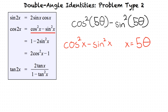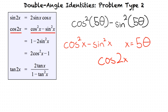Now that we know what form our problem is in, we can find the corresponding double angle formula. Going back to our double angle formula table, we see that the corresponding double angle formula is cosine of 2x. Now we plug in our x value, which is 5θ, which results in cosine of 2 times 5θ. We then distribute the 2 into 5θ, which results in our final answer of cosine of 10θ.